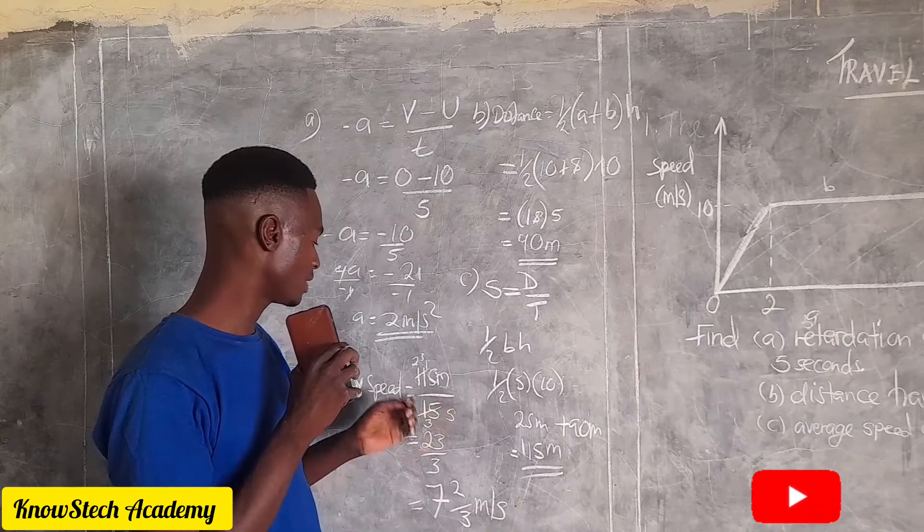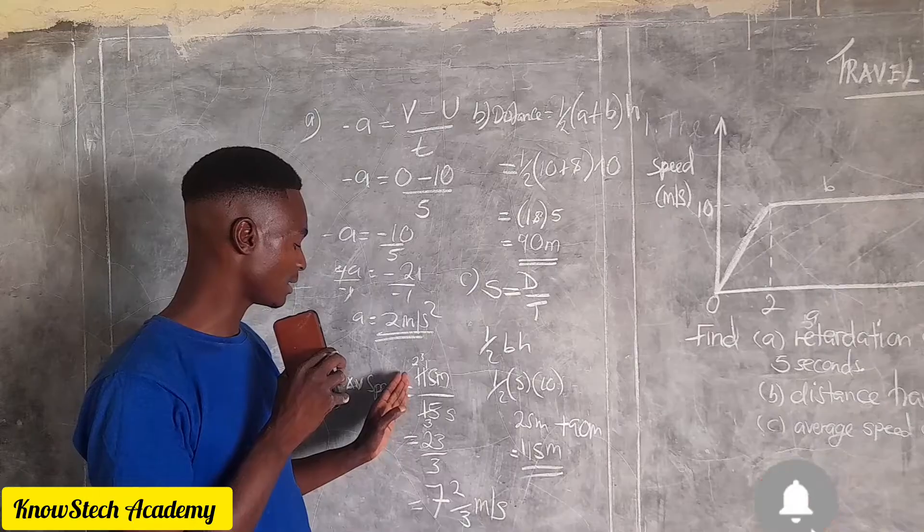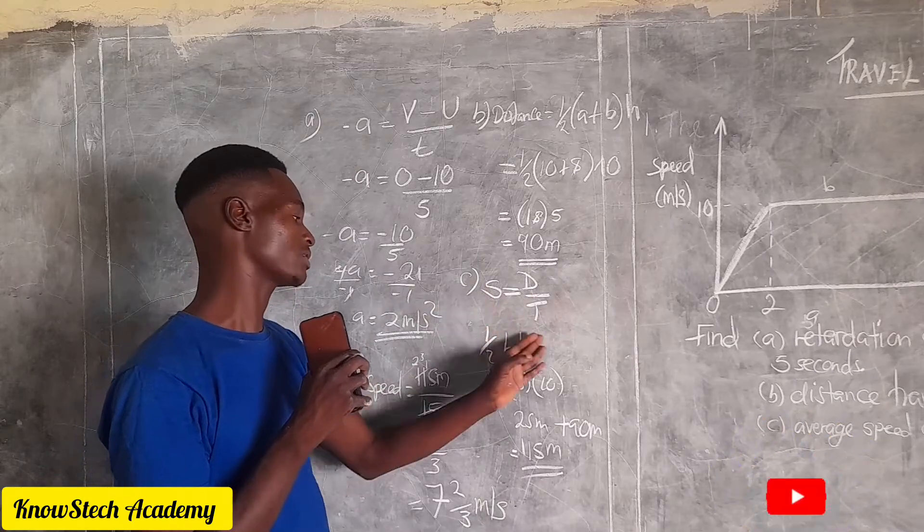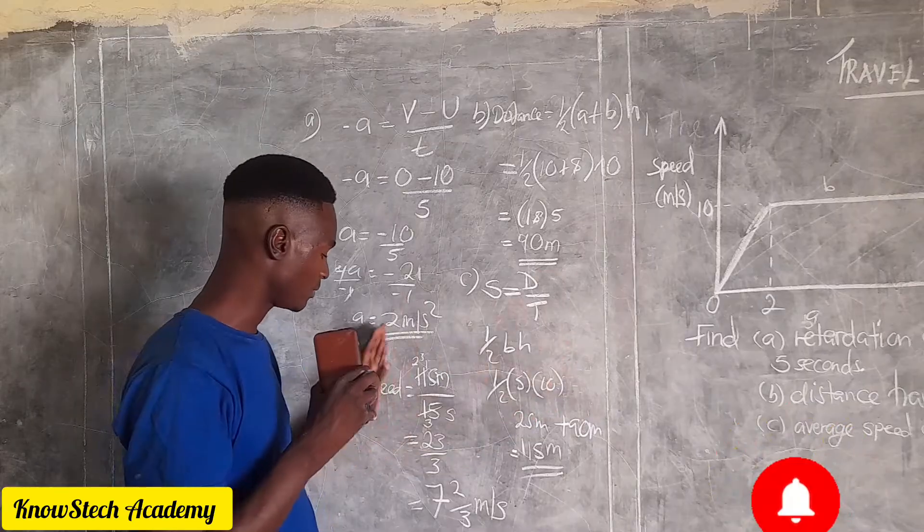That's why it's even three marks, because we are not finding it directly. You're not just going directly to find the average speed, but first we have to find the distance covered, then we substitute it.